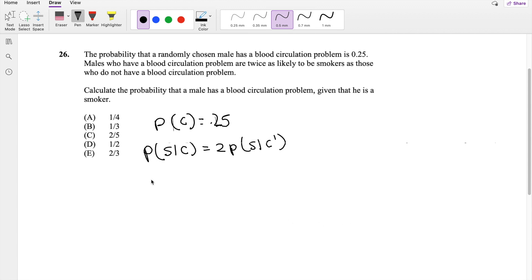And then what are we asked to find? We're asked to find the probability that the male has a circulation problem, given that he's a smoker. So this is a good sign, if the given probability is opposite, that we have to use Bayes' theorem.